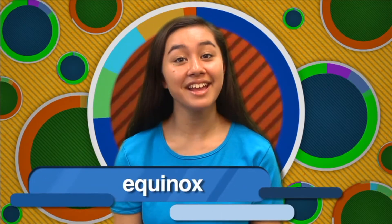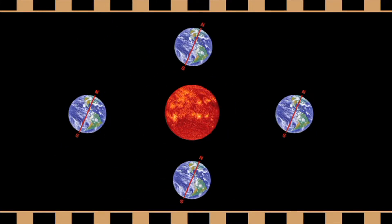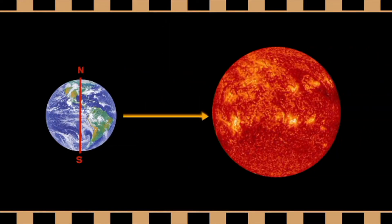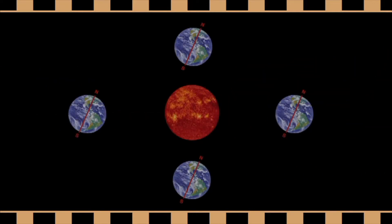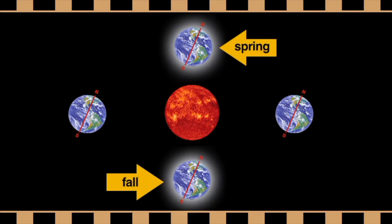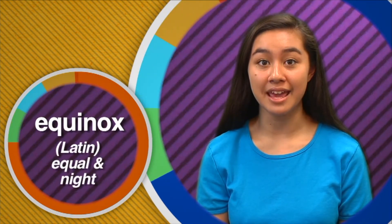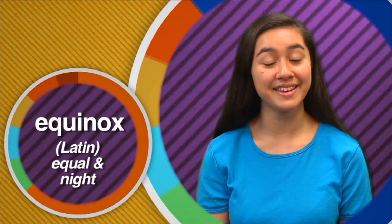As months pass and the Earth continues in its revolution around the sun, it next experiences an equinox. During the day of the fall or spring equinox, the sun is directly over the equator, so neither the Northern nor Southern Hemisphere is getting direct sunlight. Instead, our tilted Earth seems to straighten out and spin in direct line with the center of the sun. Equinox happens two times a year, every spring and fall, when the sun is directly over the equator and the number of daylight and nighttime hours is equal worldwide. The term equinox, derived from the Latin words for equal and night, describes this day because there is an equal amount of daytime and nighttime everywhere on Earth.